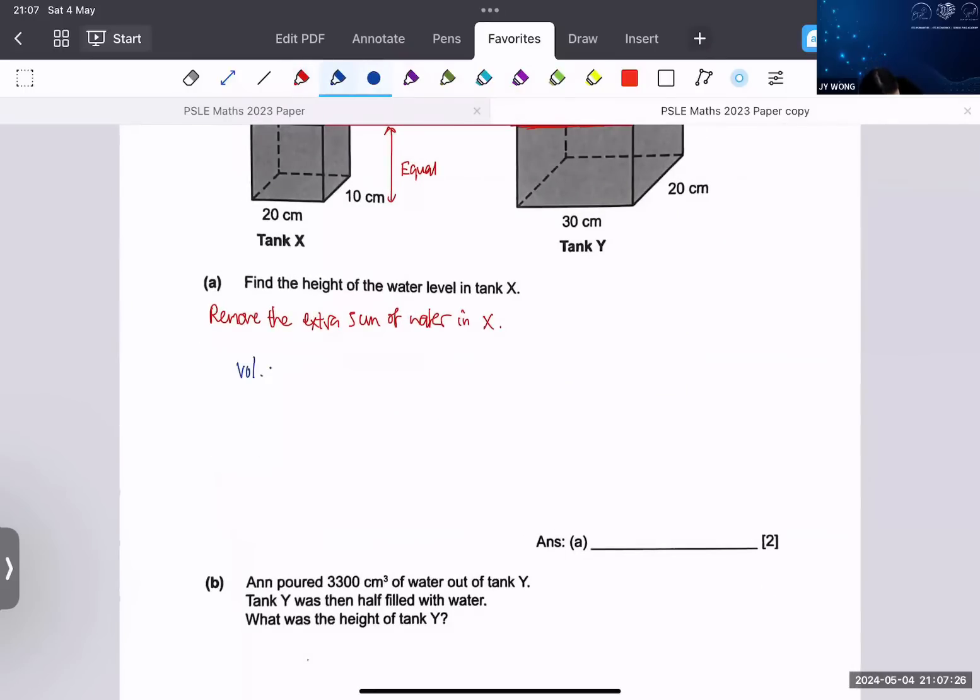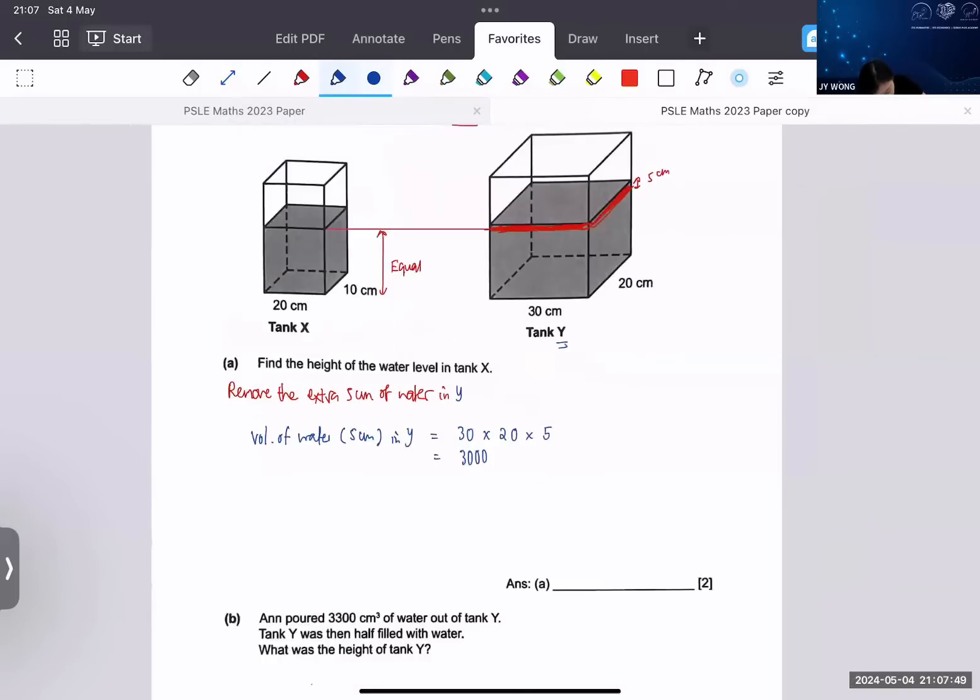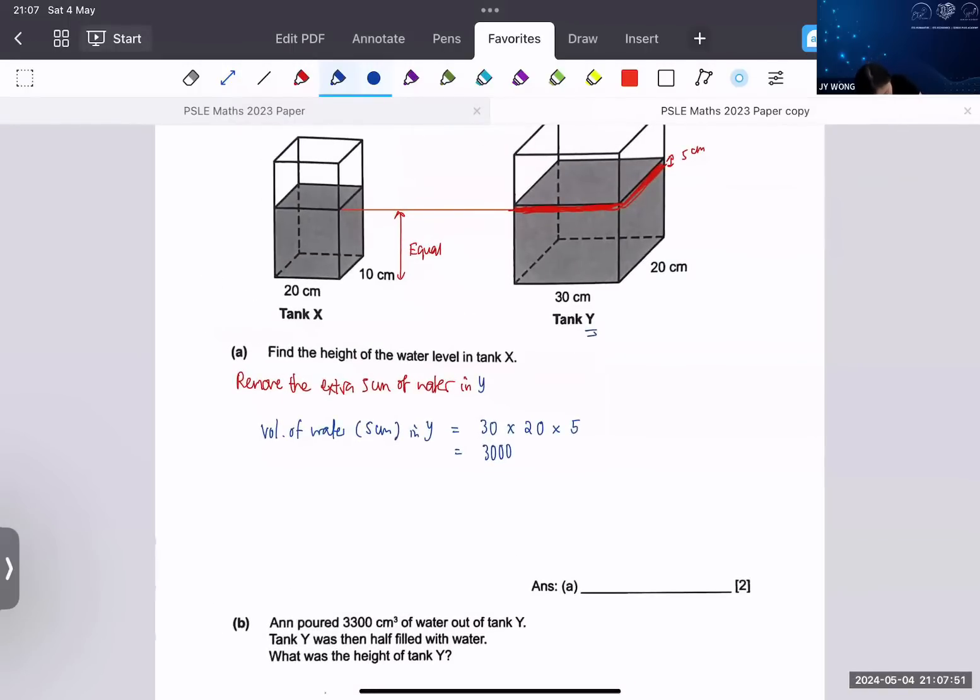So how to remove the extra 5 cm of water? Let's find out the volume of that. Volume of water 5 cm in Y would be 30 times 20 times 5 cm, that will give you 3,000.